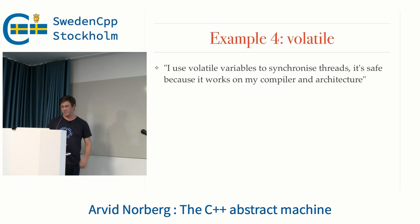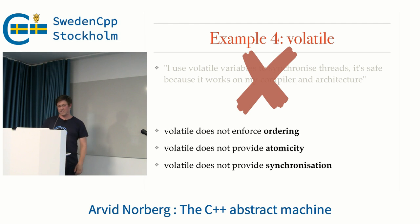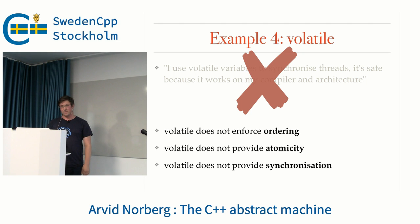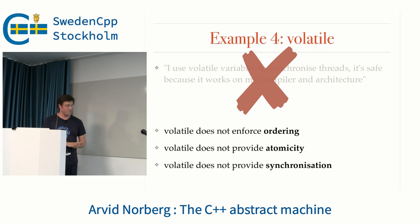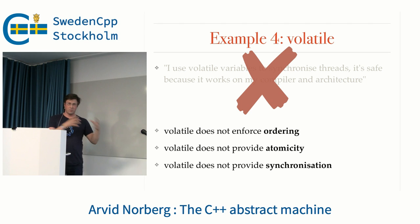Example 4: volatile — maybe this is my favorite. "I use volatile to synchronize threads. It's safe because it works in my compiler and architecture." This is one of the oldest misconceptions. Volatile does not enforce ordering. It does not provide atomicity of updates. It does not provide any synchronization. There's no guarantee that any other thread will see your writes, no guarantee that you will see them in the right order, and no guarantee that your write will happen atomically — it could be torn, as in the previous example.